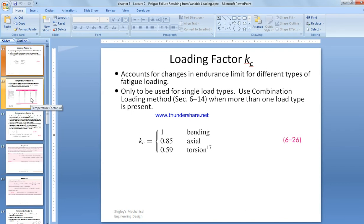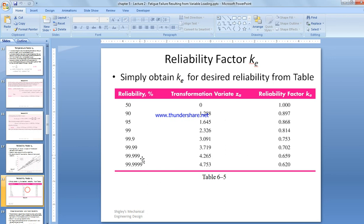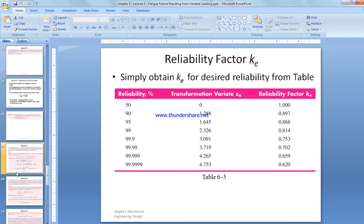Temperature: we already obtained it before. We already incorporated it in the equation, so we don't mention it here. We keep it as 1 because we've already used it before. We have the reliability at 99 percent, so we use KE at 0.814.